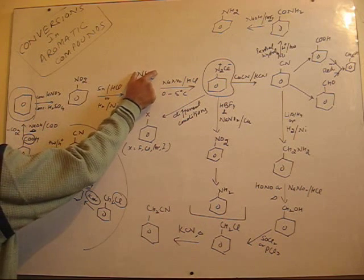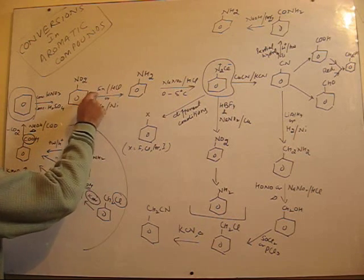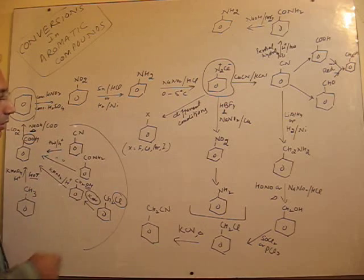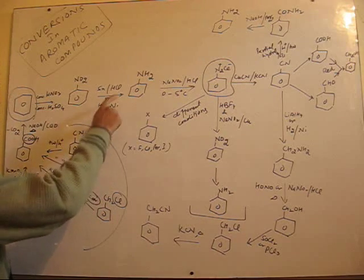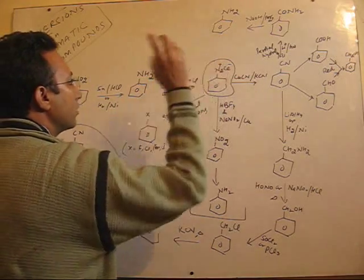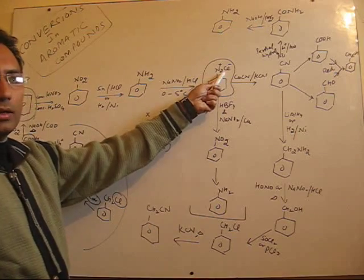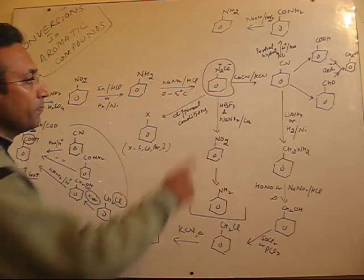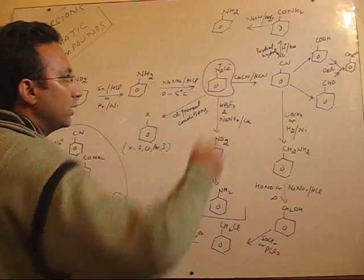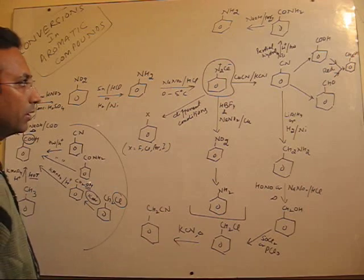The NO2 group can be converted to NH2, that is aniline, by simple reduction using Sn/HCl or H2 with nickel. So you get aniline. You know how to convert aniline into diazonium salts. This is the heart of this flowchart — once you get diazonium salts, almost all other branches of aromatic organic compounds can be prepared.